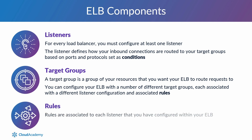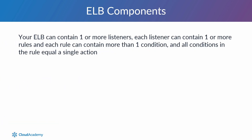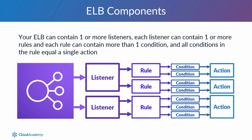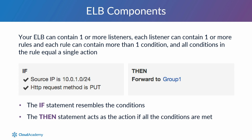Rules are associated to each listener that you have configured within your ELB and they help to define how an incoming request gets routed to which target group. Your ELB can contain one or more listeners, each listener can contain one or more rules, and each rule can contain more than one condition — all conditions in the rule equal a single action. An example rule could look as follows, where the if statement resembles the conditions and the then statement acts as the action if all the conditions are met. Depending on which listener the request was responded to by the ELB, a rule based upon a priority listing would be associated containing these conditions and actions.